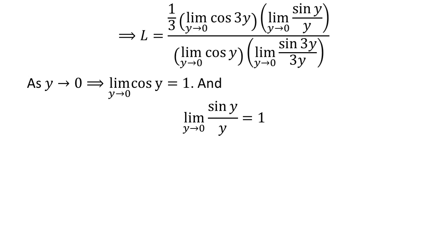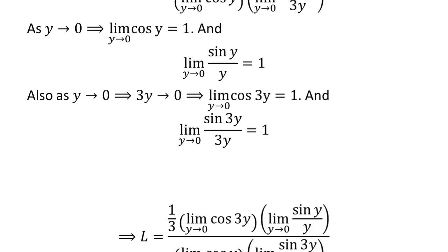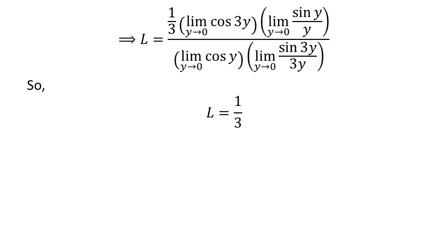We know the cosine function is continuous at 0, so at y equals 0, the limit of cosine of y is equal to 1. We also know the limit of sine of y upon y is equal to 1 as y approaches 0. As y approaches 0, 3y also approaches 0, so the limit of cosine of 3y is equal to 1 and the limit of sine of 3y upon 3y is equal to 1. Application of these facts gives us L is equal to 1 upon 3.